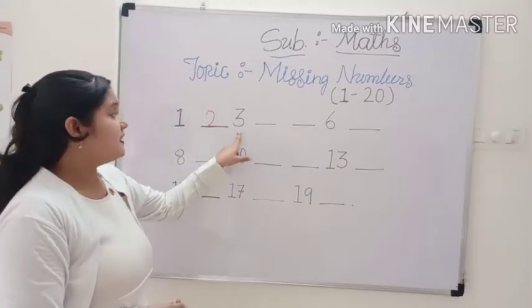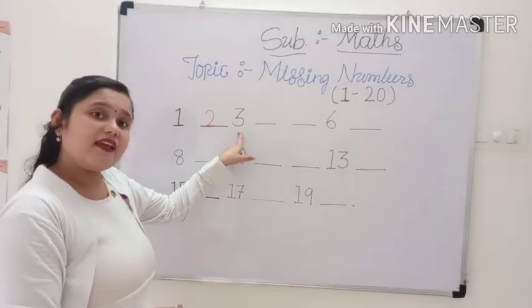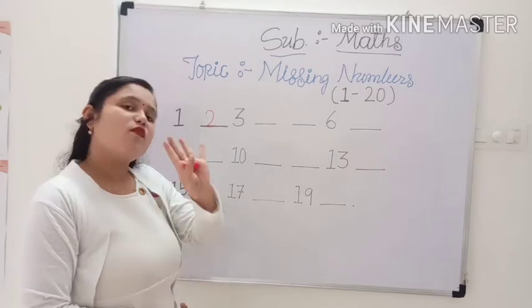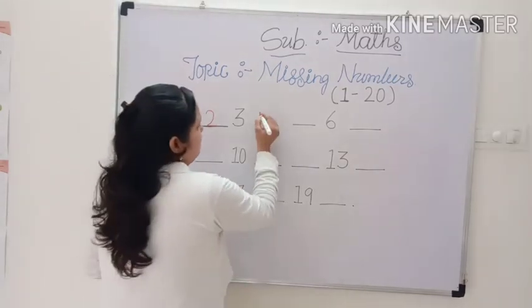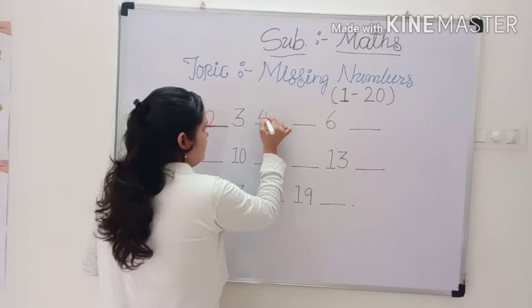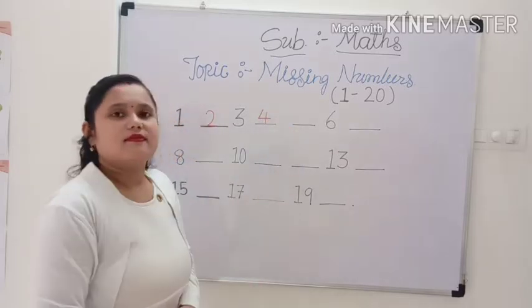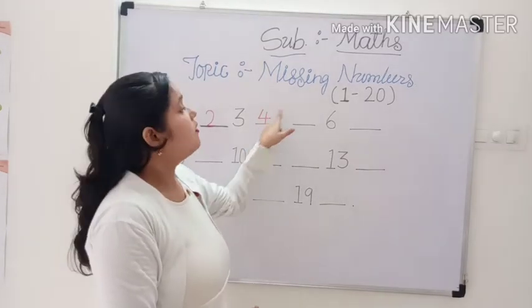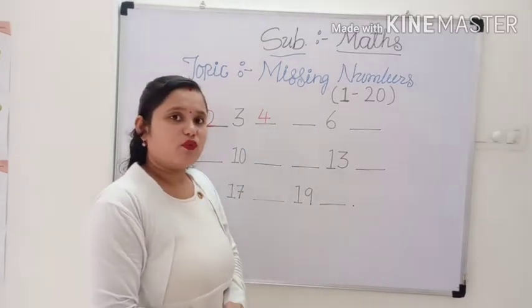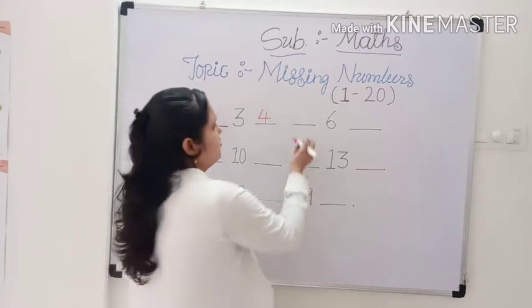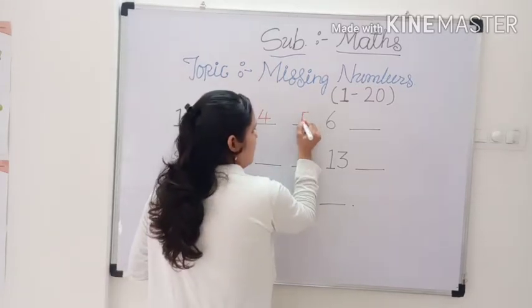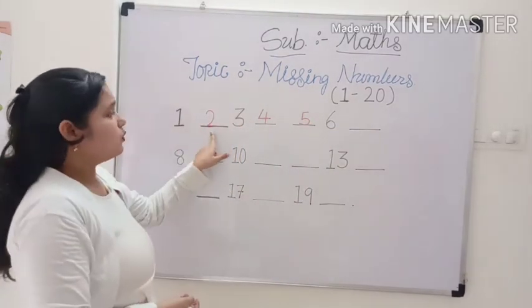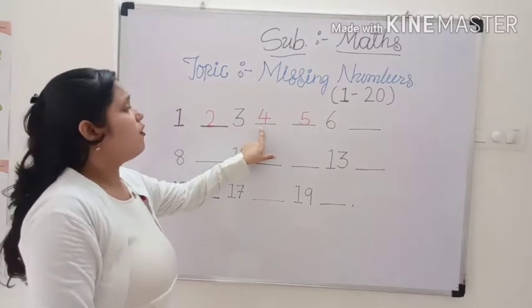Next, this is number 3. And which number comes after 3? 4. Now, this is number 4. And which number comes after 4? 5. Number 5. 1, 2, 3, 4, 5.